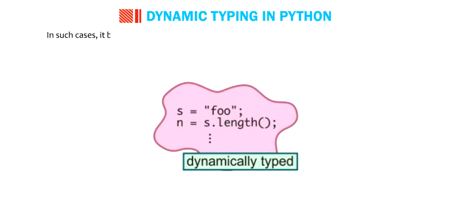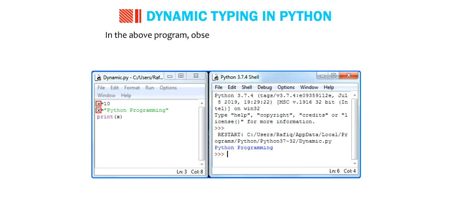In such cases, it becomes difficult to change the value of a variable after you assign a value to it. In the above program, observe that variable x is initialized twice.